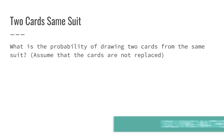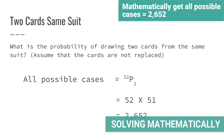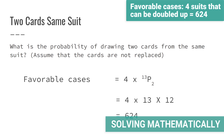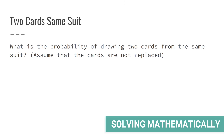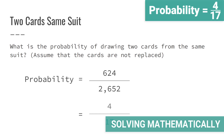We can also solve this mathematically. The total possible cases is easy to calculate: we need to arrange any two cards from a full deck, which can be done in 52P2 ways, resulting in 52 × 51 = 2652 cases. To calculate the favorable cases, we first choose which of the four suits to double up — giving four choices — then draw two cards from that suit in 13P2 ways. The total favorable cases are 4 × 13 × 12 = 624. Therefore, the probability is 624/2652, which again results in 4/17.